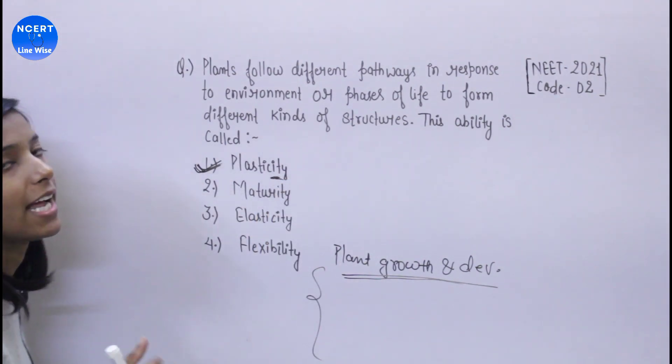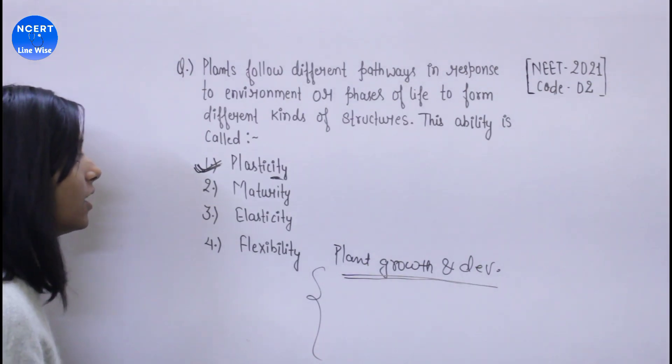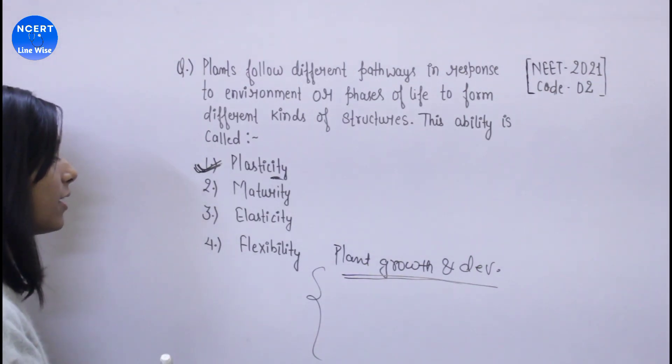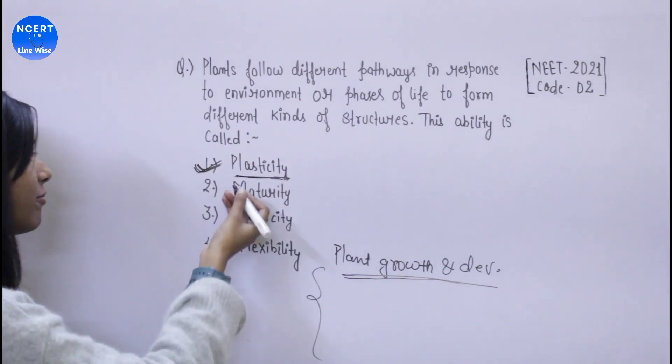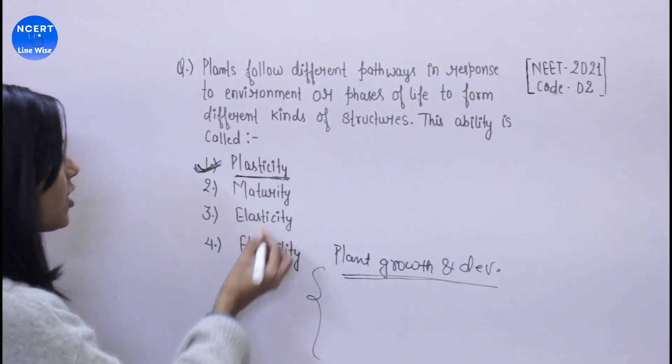Nothing is hard, it is not very complicated. The answer is plasticity, and the first option is correct for plants that form different kinds of structures.